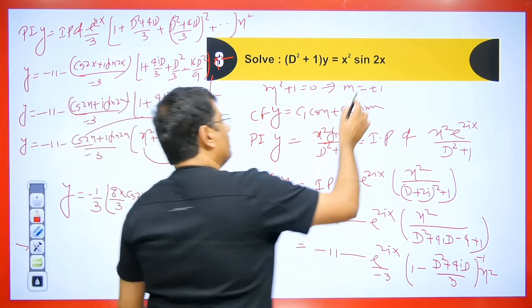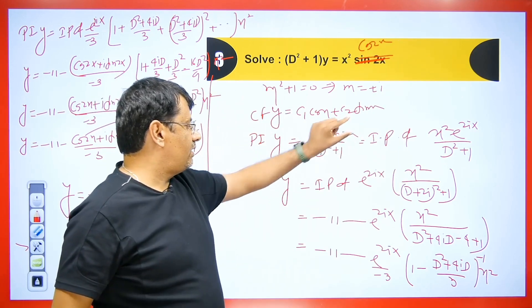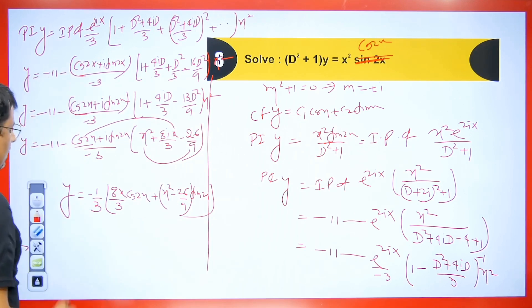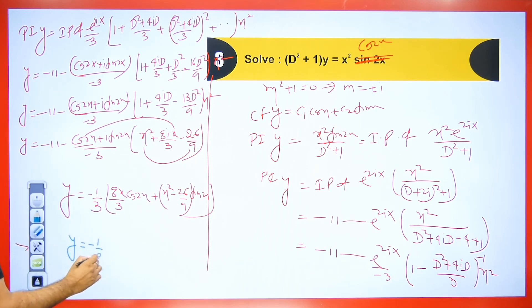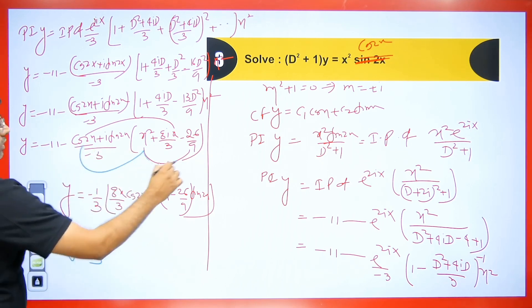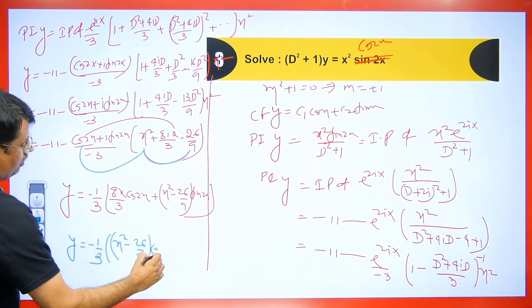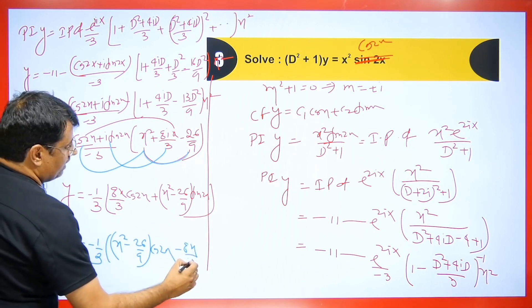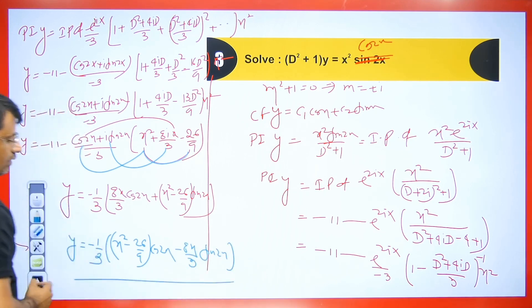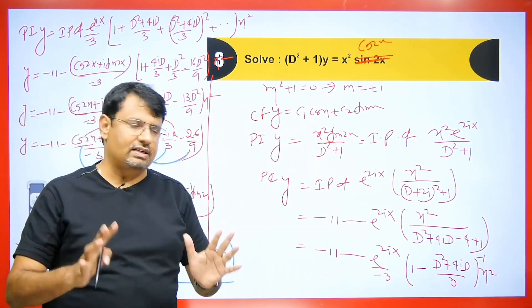If sin(2x) is replaced by cos(2x) in the question, the only change is that we take the real part throughout instead of the imaginary part. The real part gives: PI = (−1/3)·[(x² − 26/9)·cos(2x) − (8x/3)·sin(2x)]. The method is the same — only in the last step, instead of writing imaginary, you write real. The rest is the same.